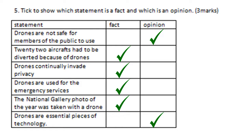An easy way of finding fact or opinion: a fact is something that is very specifically true — it did happen. So '22 aircrafts had been diverted' is true because the Birmingham air speaker confirmed it; it's been written down, it's a fact. 'Drones continually invade privacy' was a tricky one, but it is a fact because the extract talks about the police having over a thousand reports of drones going through people's private land and taking pictures — it's reported to the police. 'Drones are used by the emergency services' is also a fact because the text talks about all the different services using them.